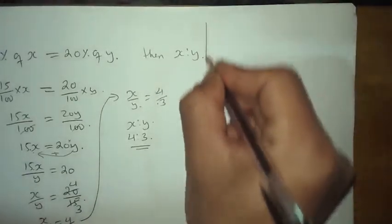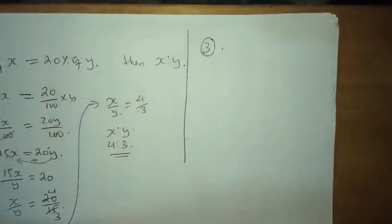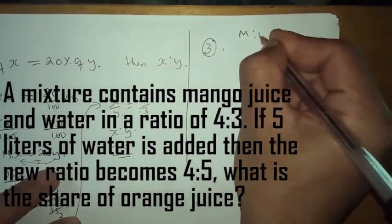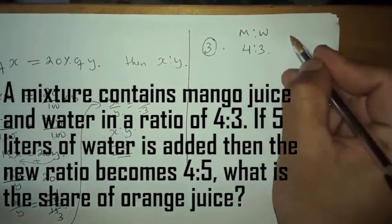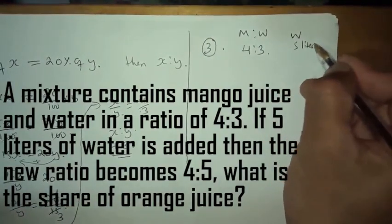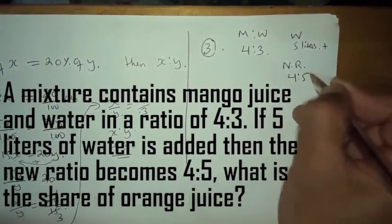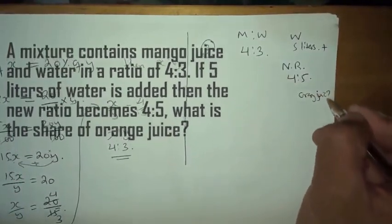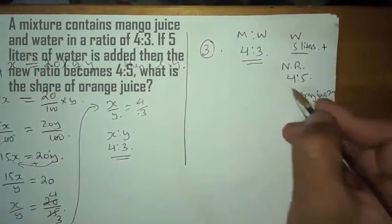Question number 3: A mixture contains mango juice and water in a ratio of 4 is to 3. If 5 liters of water is added, the new ratio becomes 4 is to 5. What is the quantity of mango juice?